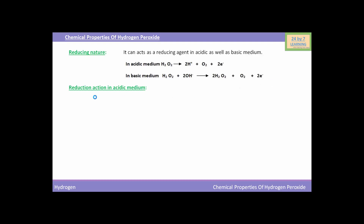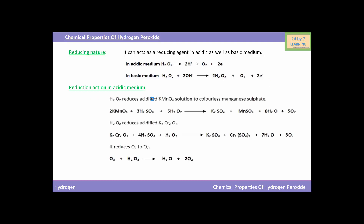Now we will see the reduction action of hydrogen peroxide in acidic medium. Hydrogen peroxide reduces acidified KMnO₄ solution to colorless manganese sulfate. You can see the reaction below. KMnO₄ (potassium permanganate) reacts with H₂SO₄ (sulfuric acid) and H₂O₂ (hydrogen peroxide), and hydrogen peroxide reduces KMnO₄ to MnSO₄ (manganese sulfate).